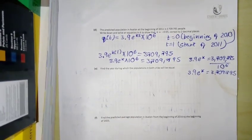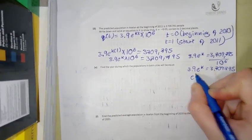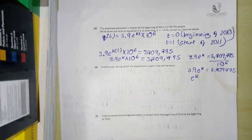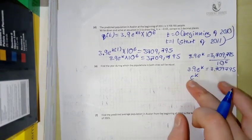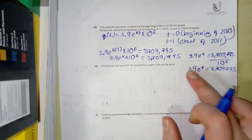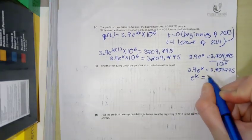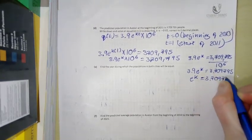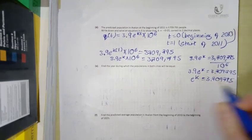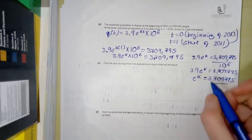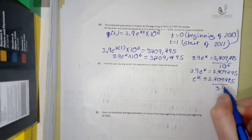So now I want to get e to the power of K by itself because with exponential, the natural exponential, I want to just get this by itself. So I'm going to divide both sides by 3.9. So 3.709795 over 3.9.